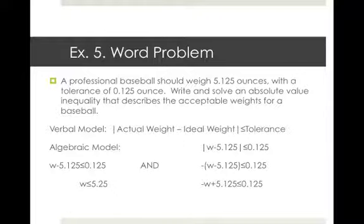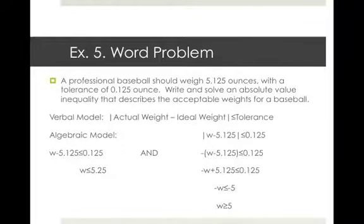For the second inequality, distribute the negative to get negative W plus 5.125 less than or equal to 0.125. Subtract 5.125 from both sides to get negative W less than or equal to negative 5. W is being multiplied by negative 1, so divide by negative 1 and reverse the inequality, giving W greater than or equal to 5. So the weight must be less than or equal to 5.25 ounces and greater than or equal to 5 ounces.